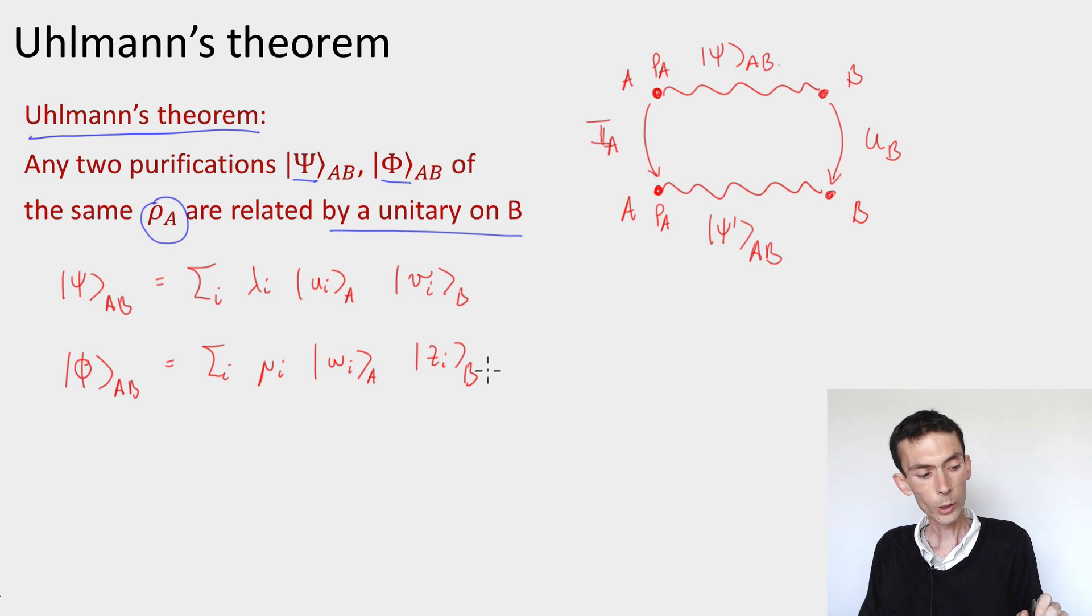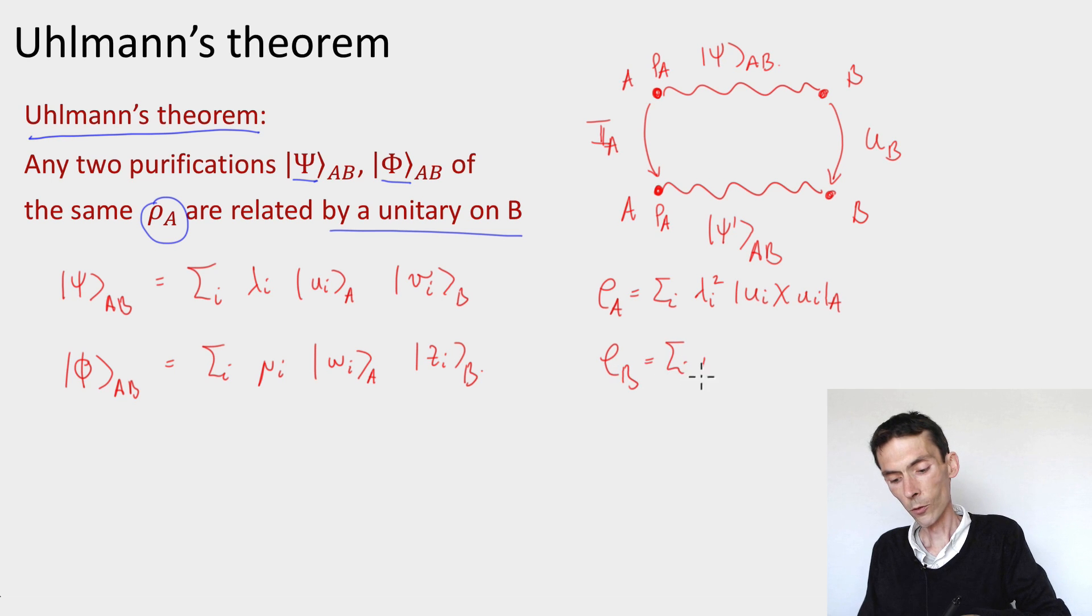So if I take the reduced density of the state ψ on A, I would get ρ_A that is going to be equal to the sum over i of λ_i² |u_i⟩⟨u_i|. And for φ on A, which is equal to the sum over i of μ_i² |w_i⟩⟨w_i|.